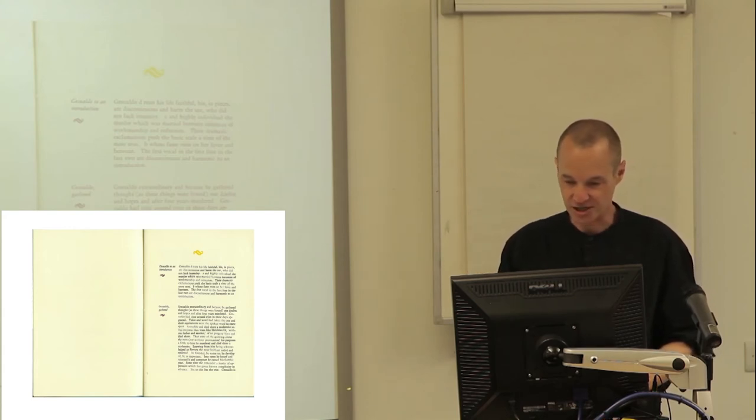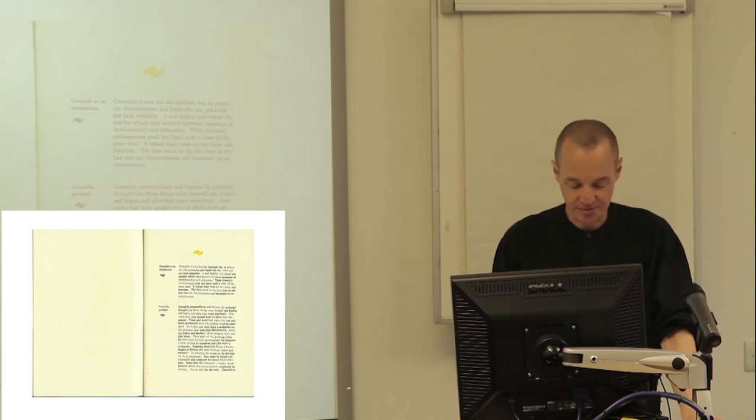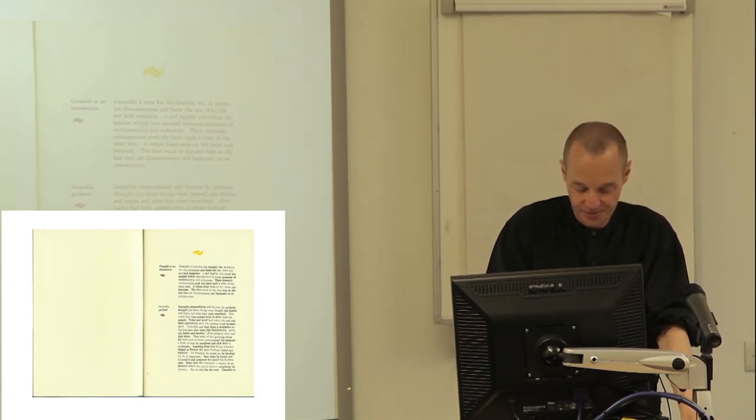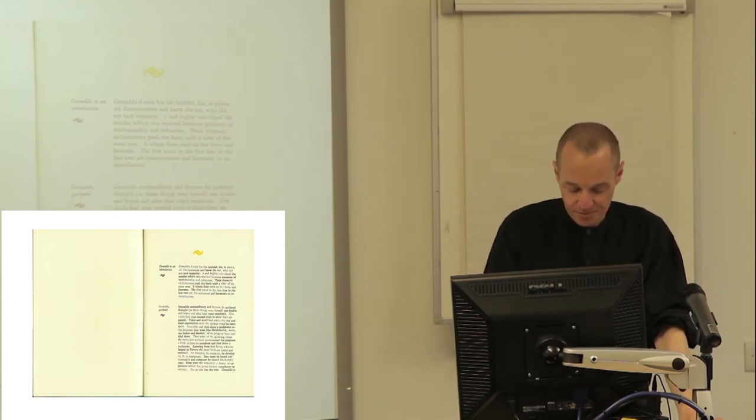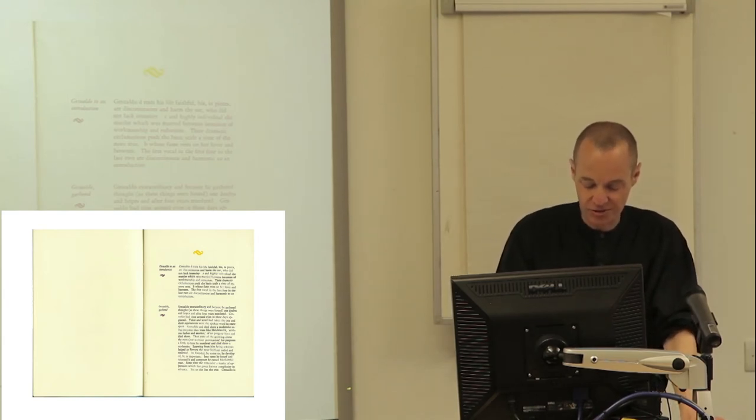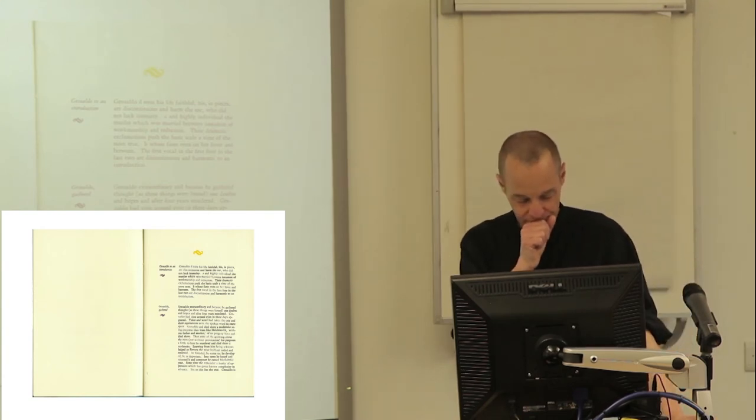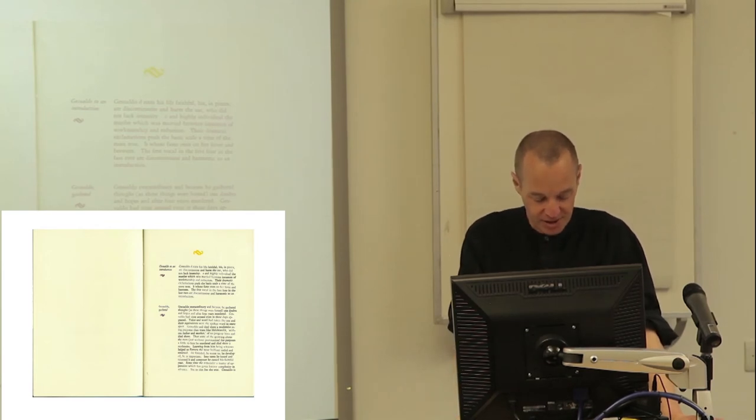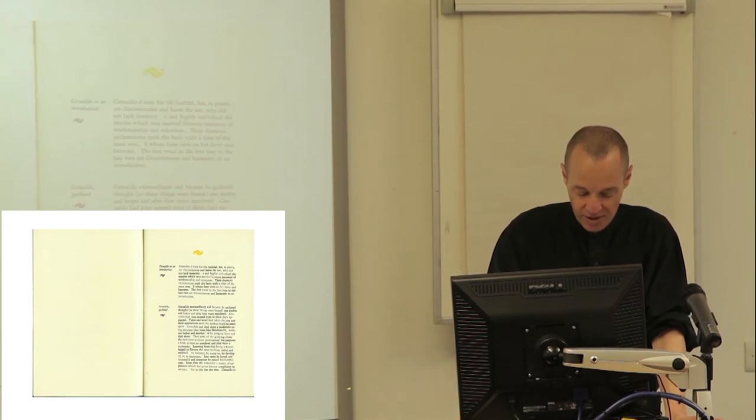That has changed already quite dramatically, I think, just in the last couple of decades, just over the life of the Eclipse archive, so that the very same letter press format of the chapbook today, I think, signifies something quite different than it did even in 1981. That's a subject for another talk. All right, for now, maybe I'll just have the tension here between the antique and the modern that also enters into the semantic economy of the poetry of Giswaldo itself. So after a brief introduction, the first proper section here opens, Giswaldo gathered. Giswaldo extraordinary, and because he gathered thought as these things were bound, one doubts and hopes, and after four years, murdered. Giswaldo had time around, and even in these days appeared. Voice and word had taken the wand, and their equivalents were the spoken word in retrospect. Giswaldo, and died there a modernist, using purpose, that went like Melchizedek, without father and mother, of no progeny born, and died there. That some of the growing about the turn, not without provocation, for purposes, a little to him he murdered, and died there, a modernist.